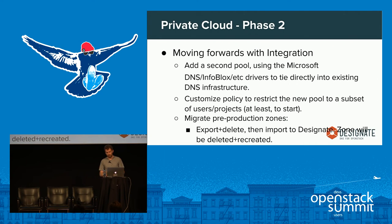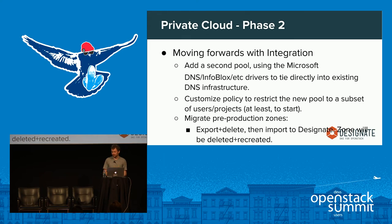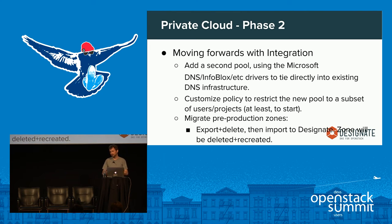Once you've built up confidence, move to phase two. Create a second pool tied into your Active Directory, Infoblox, or whatever you're running. Put tight ACLs on it so only a few people can use it at first, then build trust by moving some pre-production workloads in while leaving the labs environment on Bind and PowerDNS.